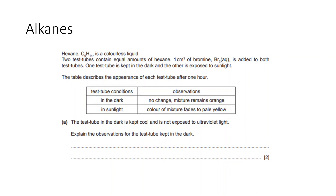Hexane is placed with aqueous bromine under two conditions: in the dark, and in sunlight. In the dark there is no change — the mixture remains orange. In sunlight the color fades to pale yellow, meaning bromine has reacted. In the dark, there is no reaction because the reaction between hexane and bromine is initiated only under UV light.